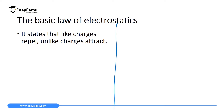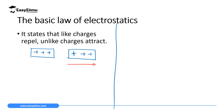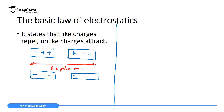If we bring a material which is positively charged — it has lost some electrons — close to another material which is also positively charged, which has also lost some electrons, what you realize is these two materials will repel each other and move away from each other. Similarly, if you bring a material which is negatively charged close to another material which is also negatively charged, there will also be a repulsion and they will move away from each other.